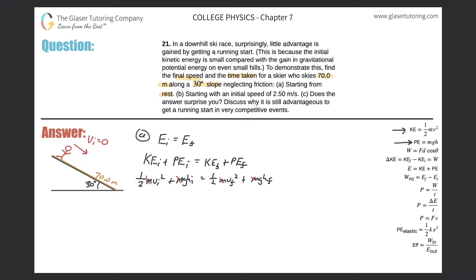Now let's think about the initial kinetic energy. They told us the initial velocity for Part A was zero, so that whole first term cancels out. The only thing we're left with is the potential energy, which is g times the initial height. But did they give us the height? They didn't — but don't fret, because we can find it.